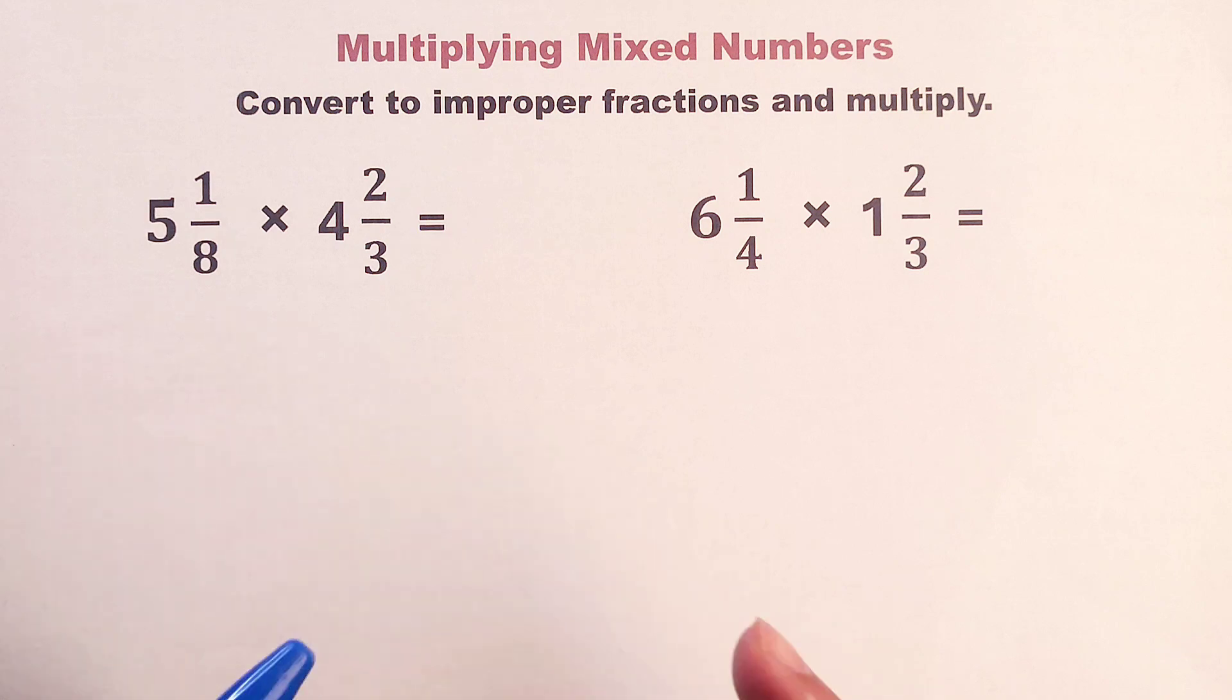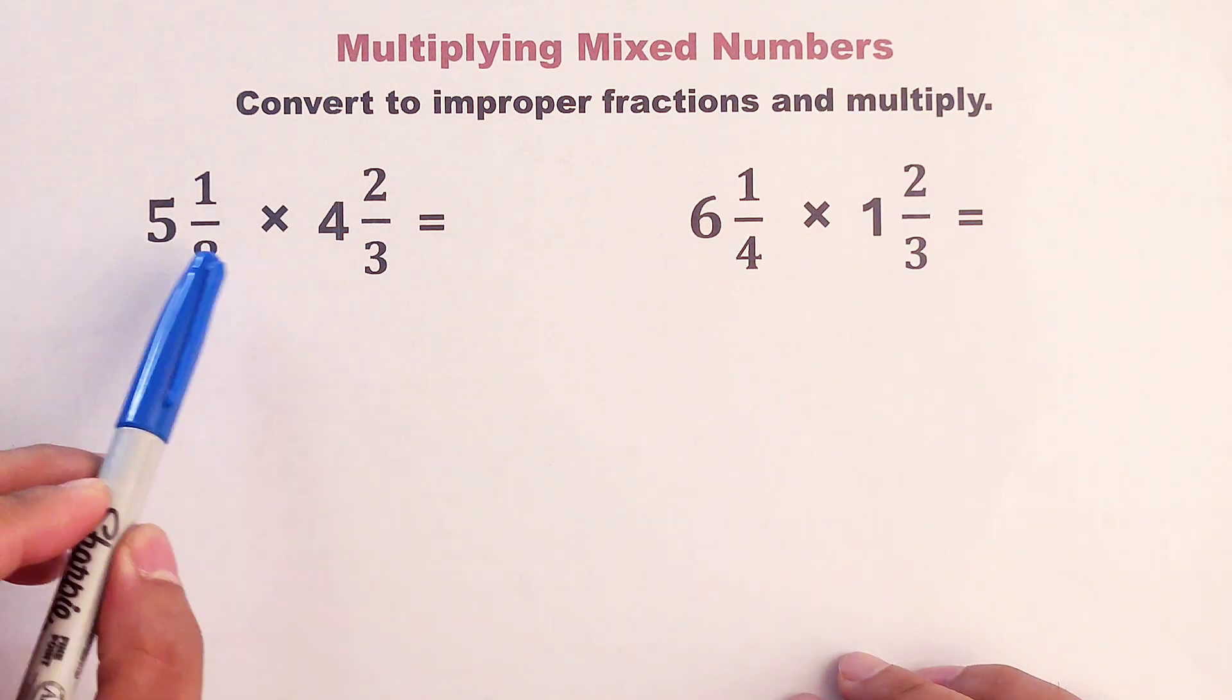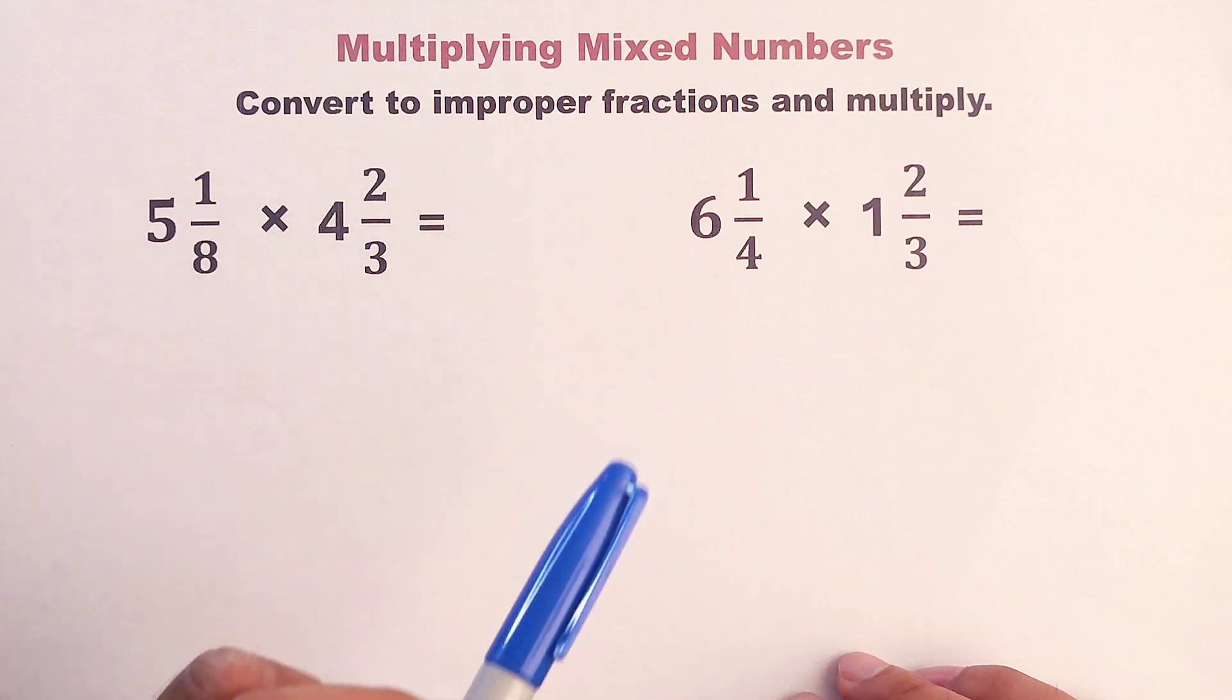So what we have here are mixed numbers to be multiplied. And the first step is to convert these mixed numbers to improper fractions. Then we will multiply.